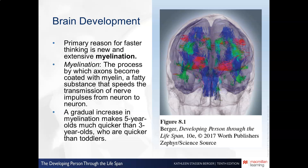One of the primary reasons for faster thinking as children begin to think faster and more clearly is extensive myelination occurring in the brain. Myelination is the process by which axons become coated with myelin, a fatty substance that speeds the transmission of nerve impulses from neuron to neuron. This process occurs throughout our entire lives.